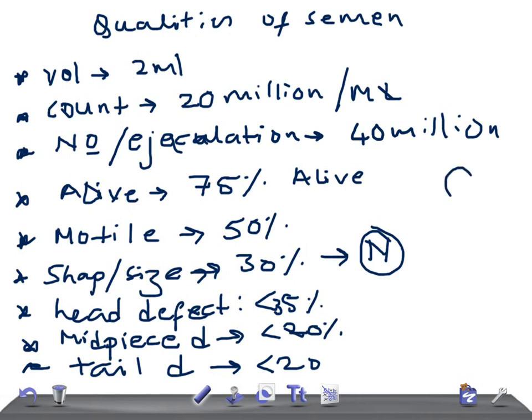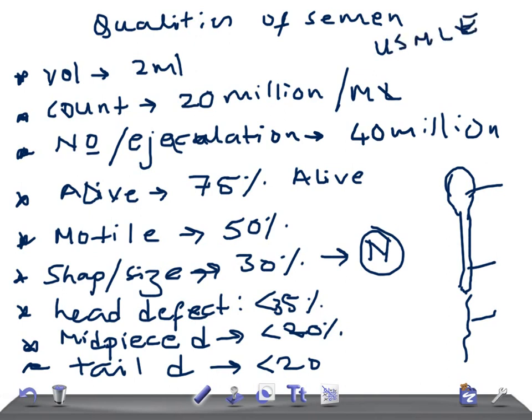To summarize with a simple diagram: the sperm has a head, a middle piece, and a tail. These are the key qualities of semen required for fertility, which are really very important for USMLE and any other medical board examinations. Thank you so much for watching — please share the video with your friends and subscribe to our channel.